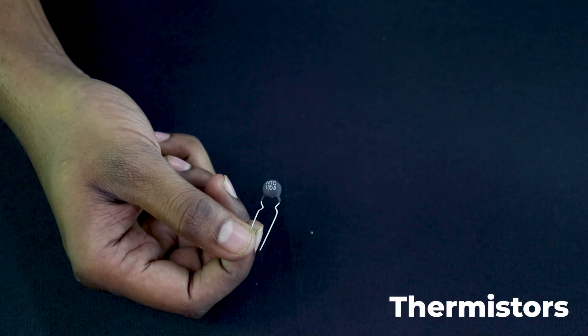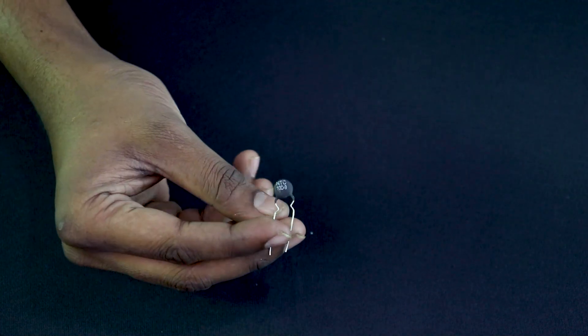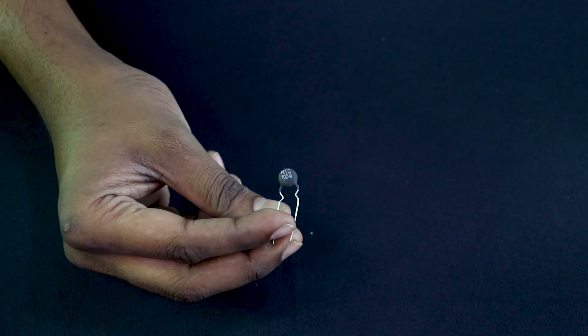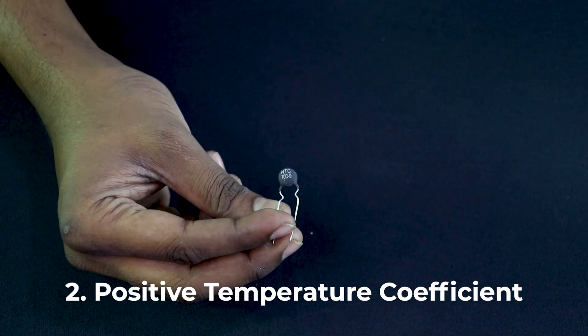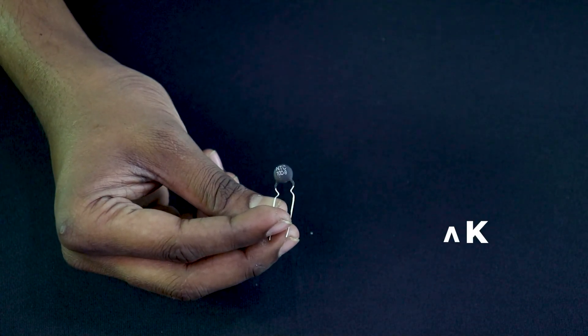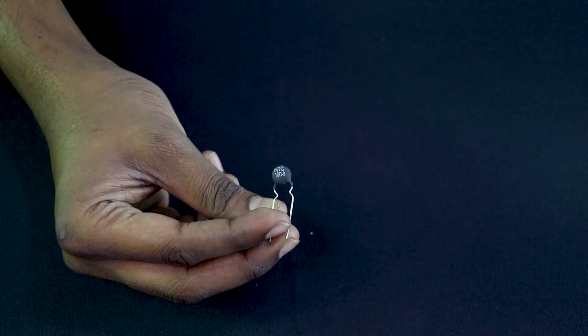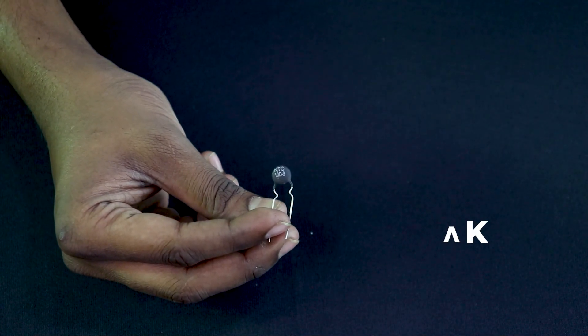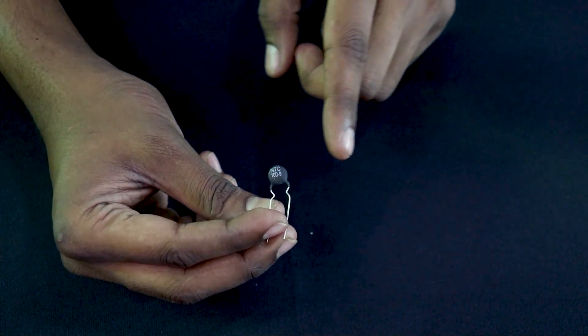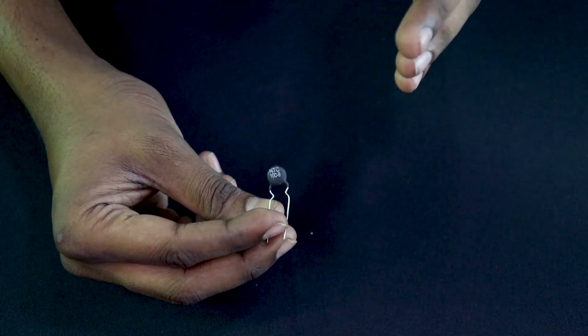So thermistor's resistance is proportional or inversely proportional to the temperature. So these come in two variants. One is the NTC which is negative temperature coefficient, and the other one is PTC which is positive temperature coefficient. So negative temperature coefficient means that as the temperature around increases, the resistance will decrease, and positive temperature coefficient means that as the temperature around increases, the resistance of this particular element will also increase. So this is basically an NTC which are mainly used. PTCs are not mostly used.